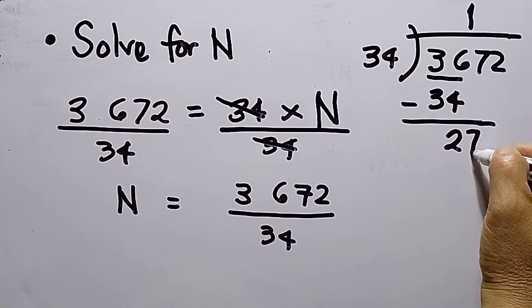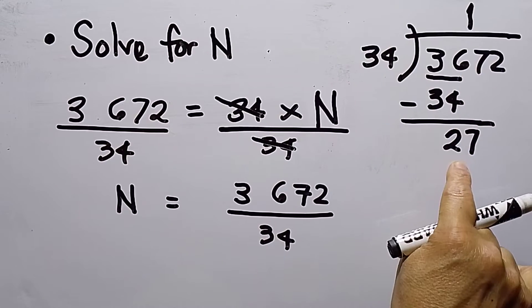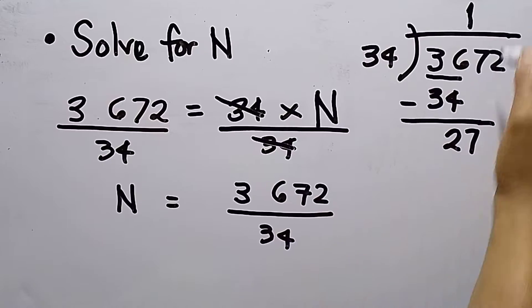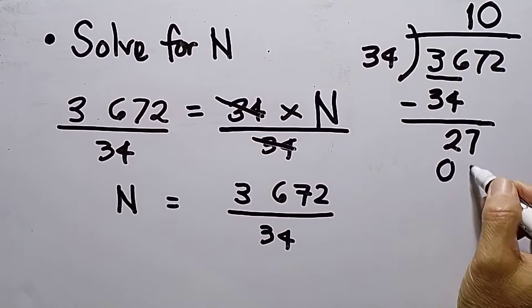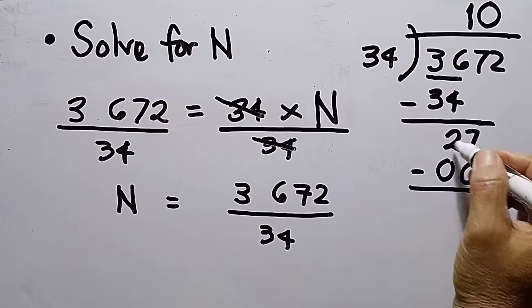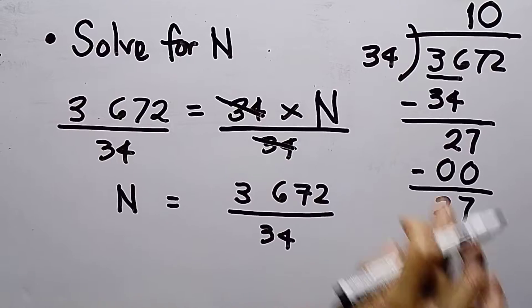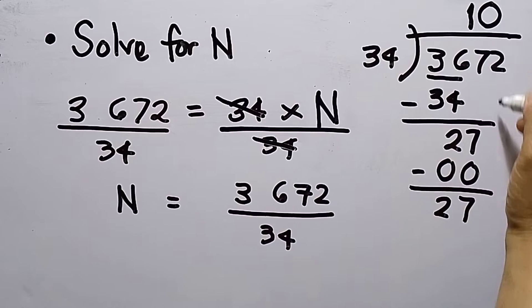Since 27 is smaller than the divisor, this will be 0. And then multiply 0 times 0, so this will be 27. 27 is still incapable to divide by 34, so I need to bring down the last digit, which is 2.